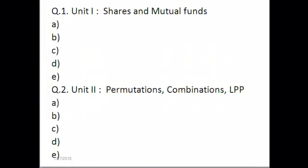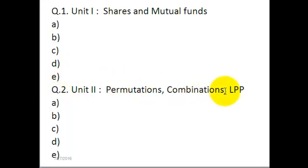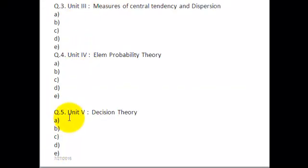To sum up, the question paper will look something like this: Question 1 is from Mathematics Unit 1, with 5 sub-questions — attempt any 4. Question 2 is from Unit 2, again 5 sub-questions — attempt any 4. Similarly for Statistics, Questions 3, 4, and 5 each have 5 sub-questions and you have to attempt any 4.